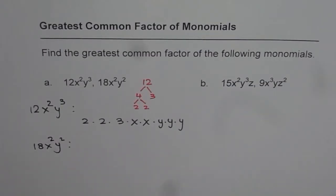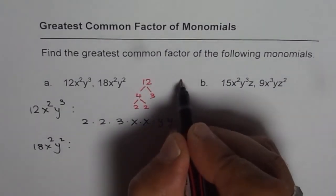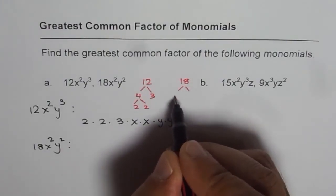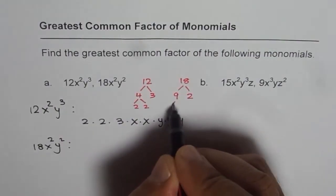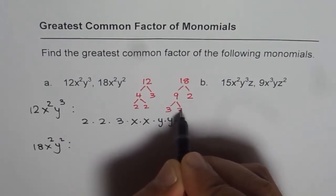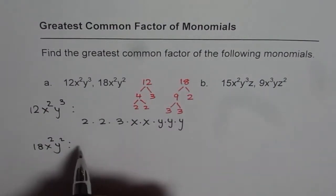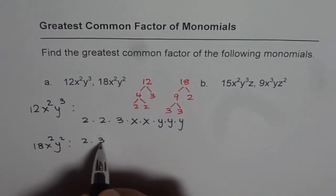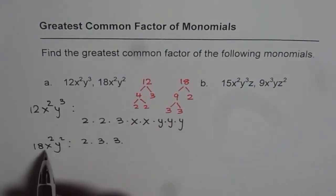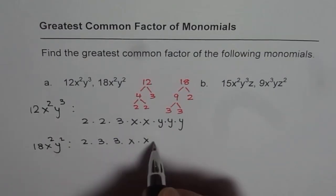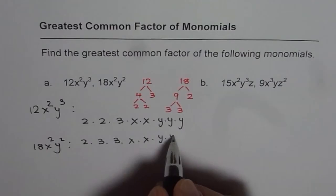Now for 18, let's do the prime factorization. 18, you could write this as 9 times 2 is 18 and 9 is 3 times 3. So that gives us all the prime factors for 18, which are 2 times 3 times 3. x² means x times x, y² means y times y.